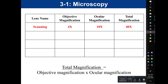The next biggest lens is the low power lens, with an objective magnification of 10x. That 10x objective combined with the 10x ocular gives a total magnification of 100x. The next lens is the high dry lens — high power but dry because it does not use immersion oil. The high dry lens must be kept dry; it cannot get oil in it. Its objective magnification is 40x, and with the 10x ocular the total magnification is 400x.